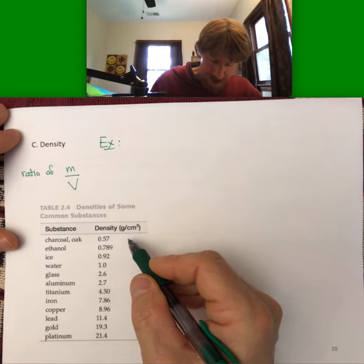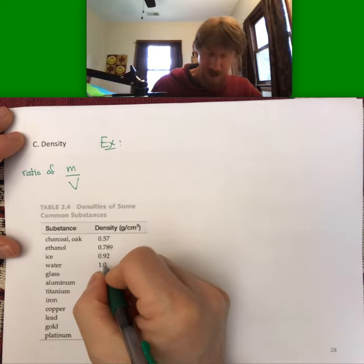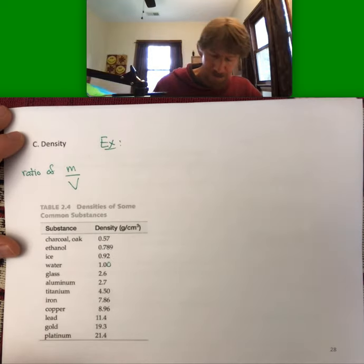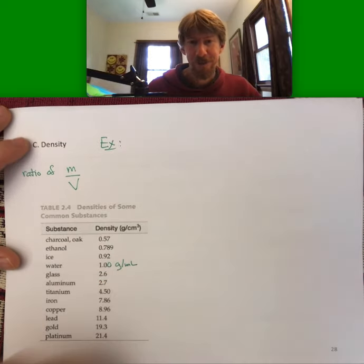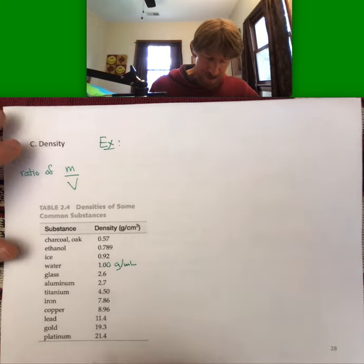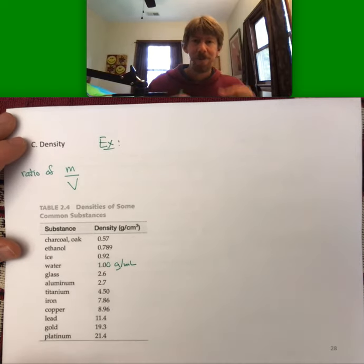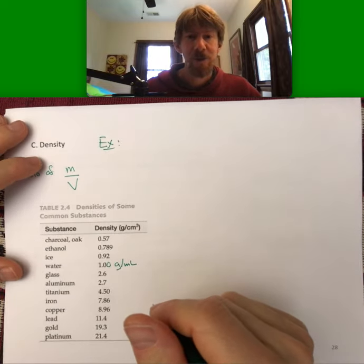For units, when we talked about water, we actually said we'd prefer to use 1.00 grams per milliliter, which works better for liquids because we can measure liquids in beakers and graduated cylinders. But for solids like platinum, gold, and lead, you tend to measure them in centimeters, so centimeters cubed works better.